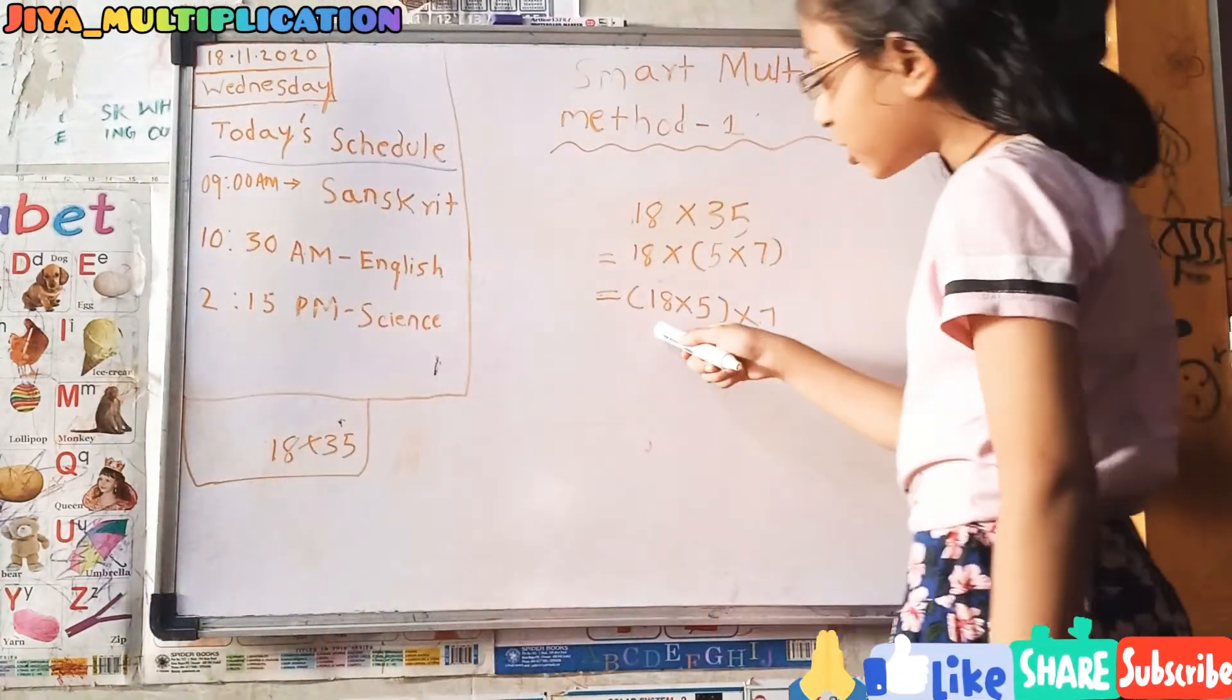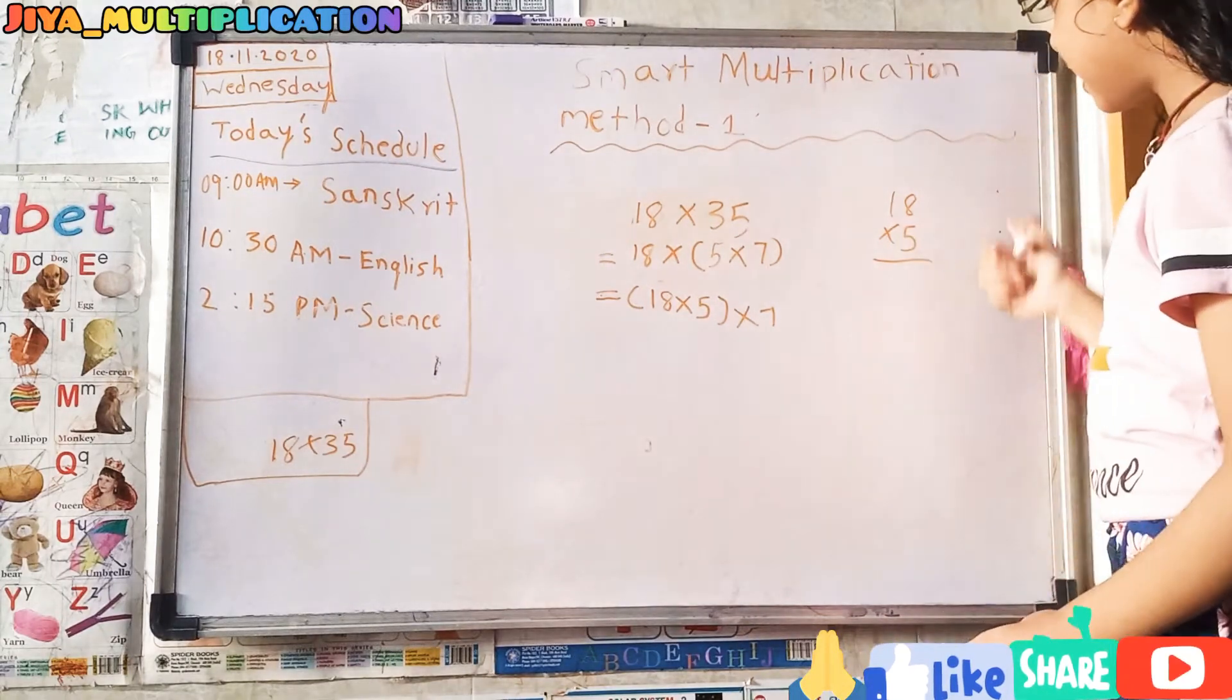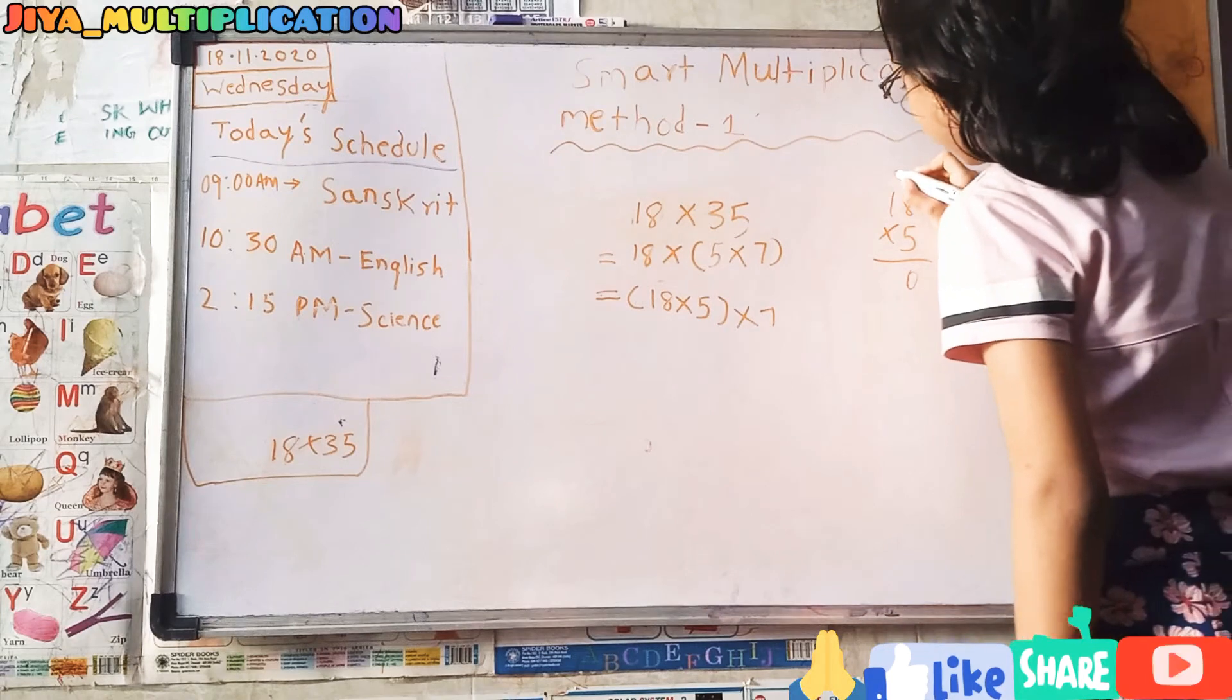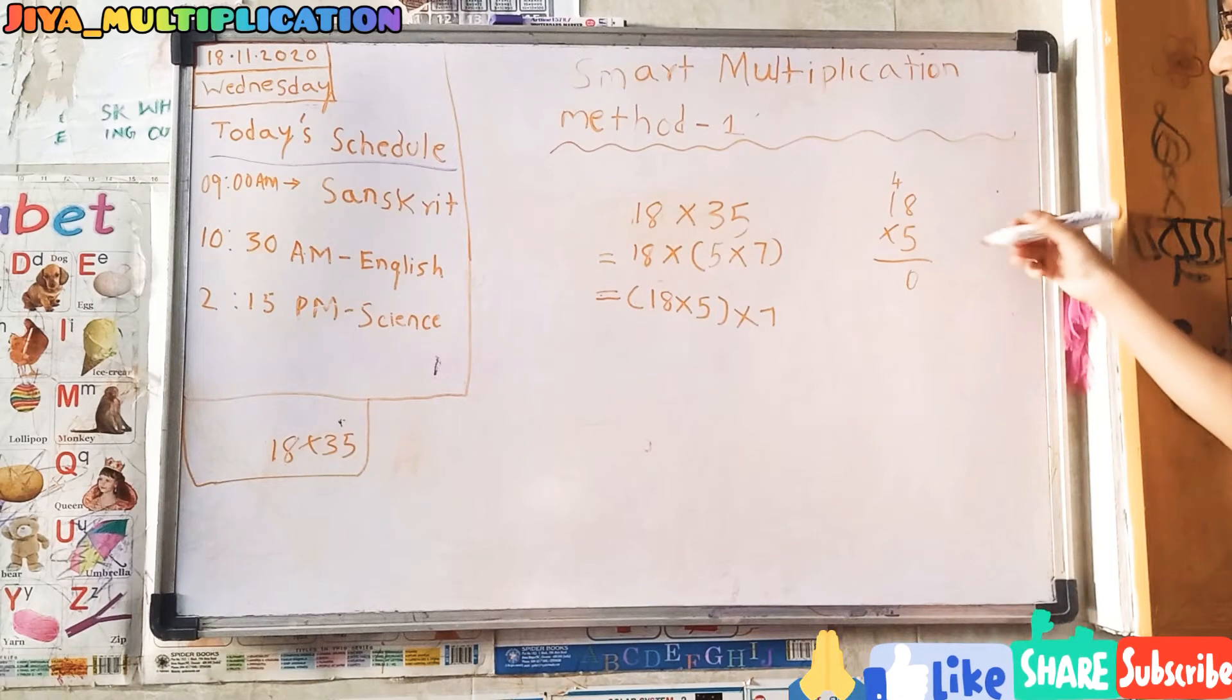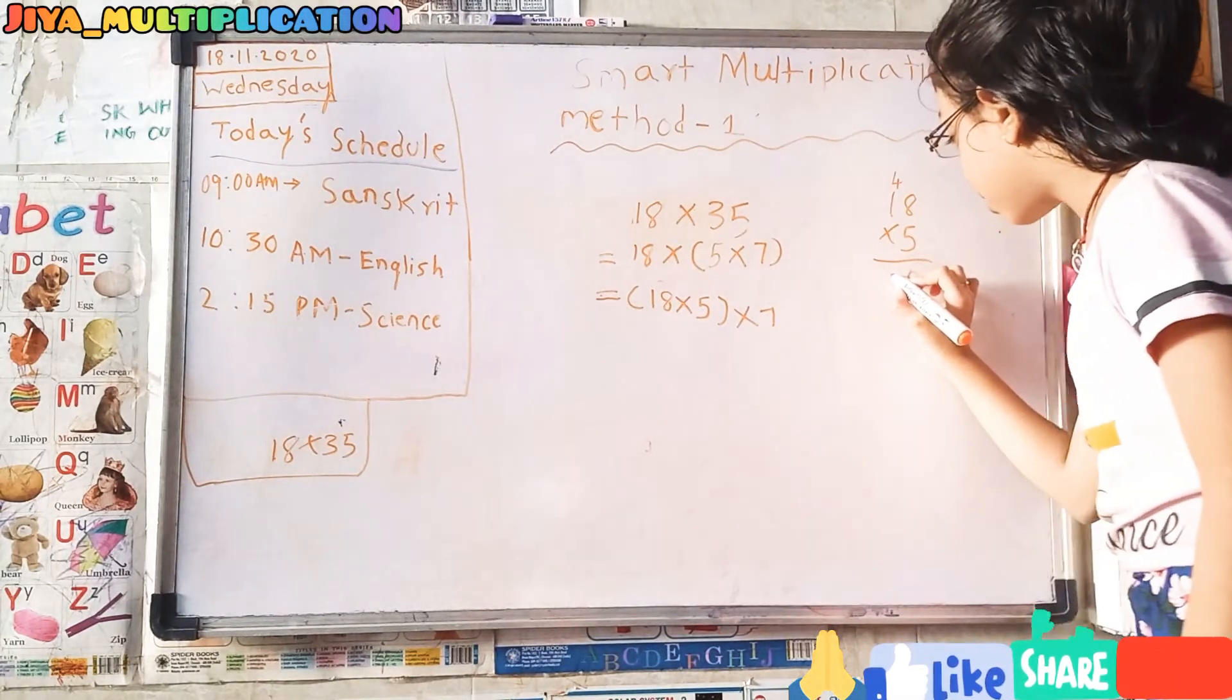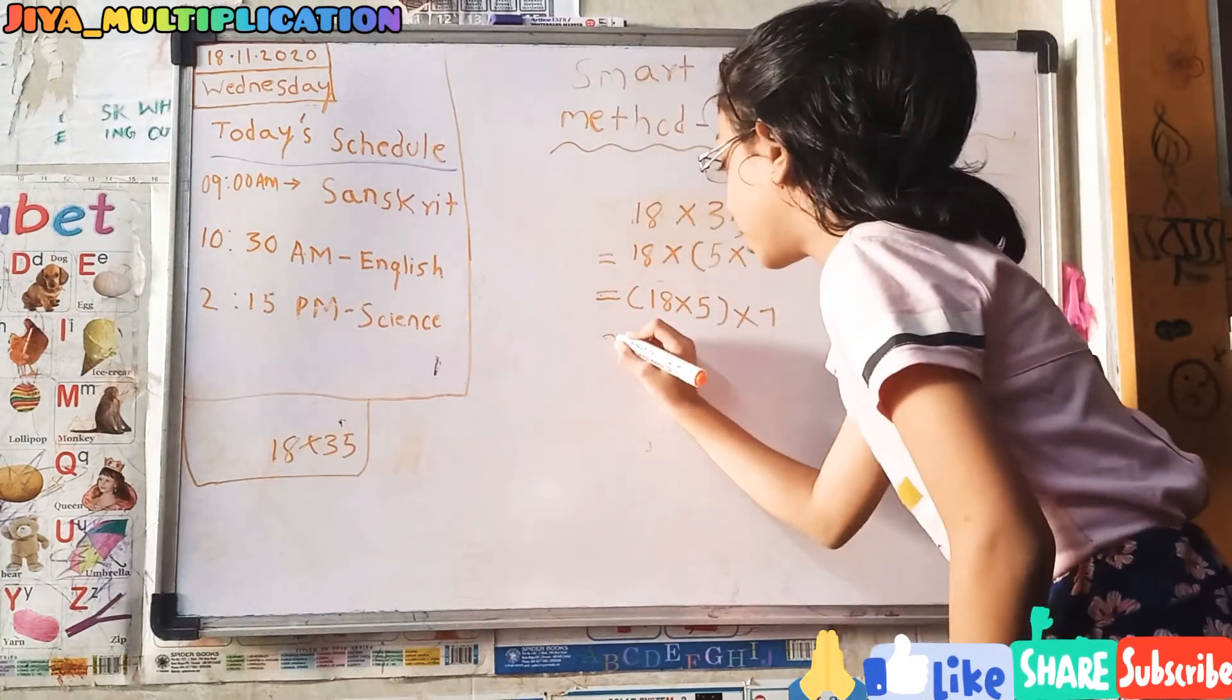We should multiply 18 into 5. 5 eights are 40. I am writing 0 and we should carry our 4. 5 ones are 5. Then here 4. Then it will come 9. The answer is 90. Let's give equals and write.